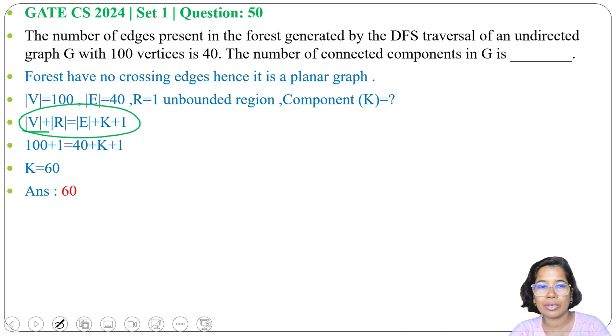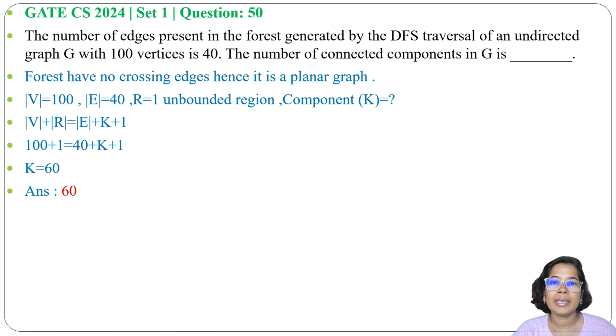So either you can use this Euler's formula for finding connected components or you can use number of vertices minus 1 minus number of edges plus 1. So if there are 100 vertices and 40 edges, then number of connected components in graph is 60. I already discussed DFS traversal in algorithm and planar graph in mathematics graph theory. Just go through the lecture. And if this lecture is helpful for you, please like, share and subscribe. Thank you.